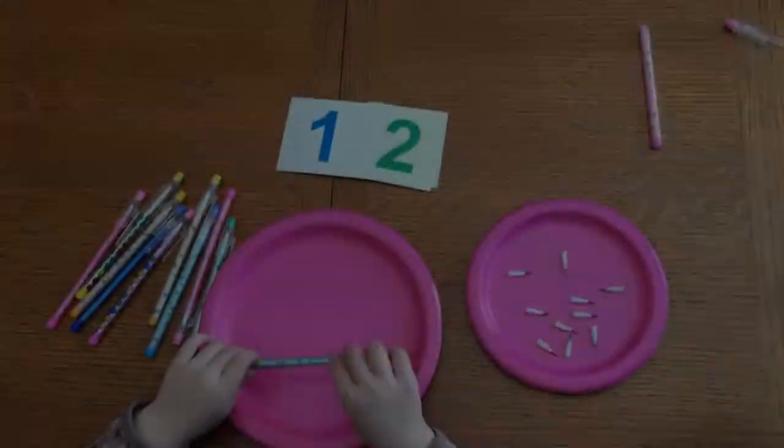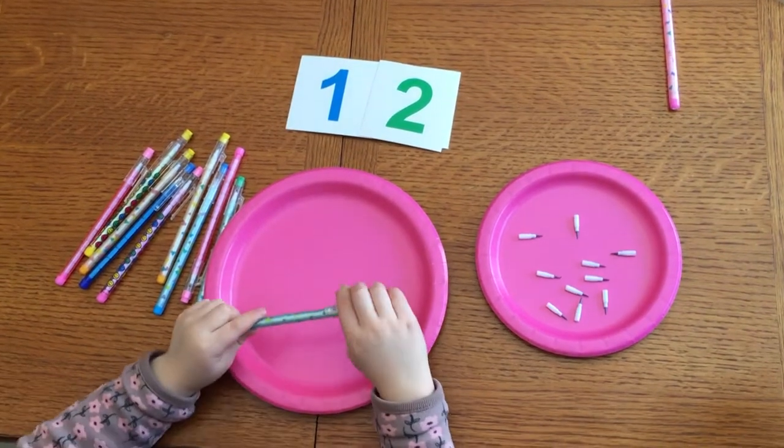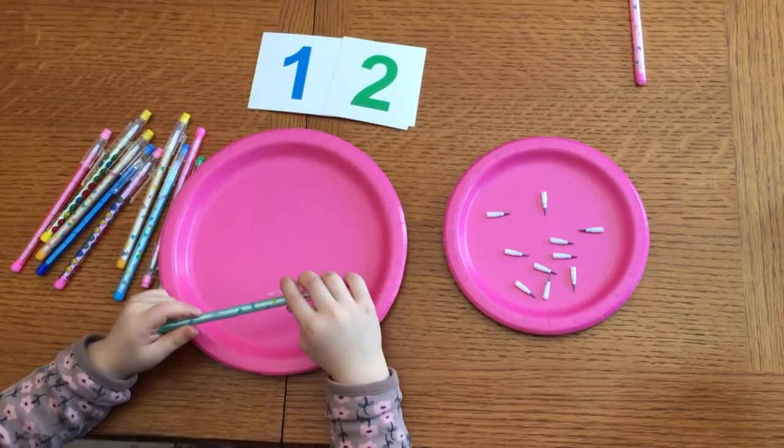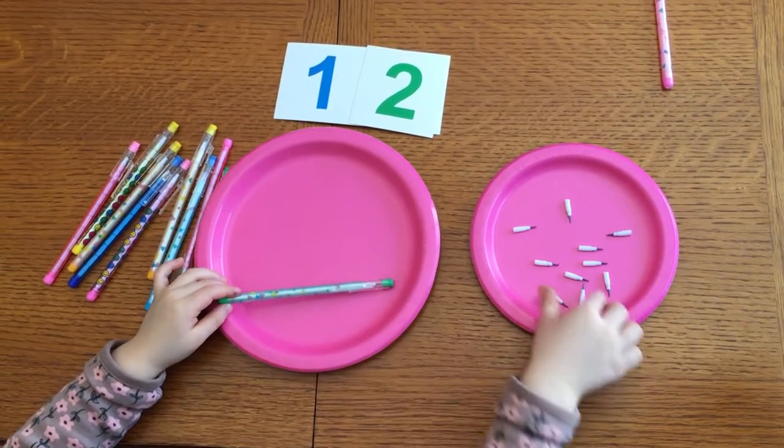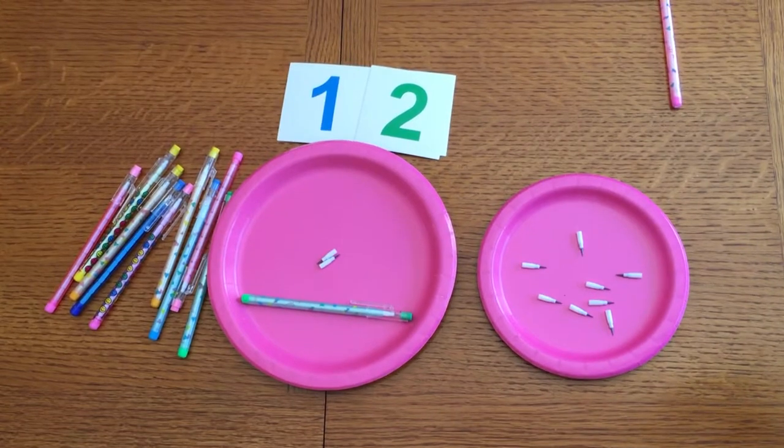How about what's the easiest way to count out twelve of the little tips? So one pencil - I know! Put out one pencil and then put out these two. That's right! Great job!